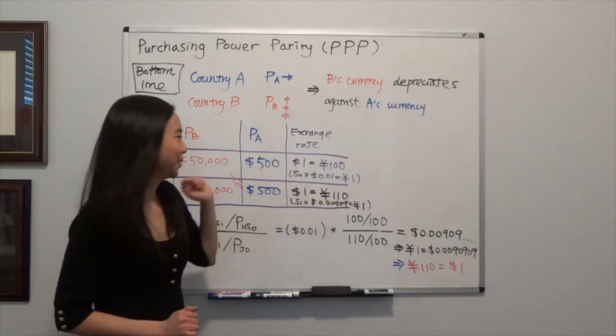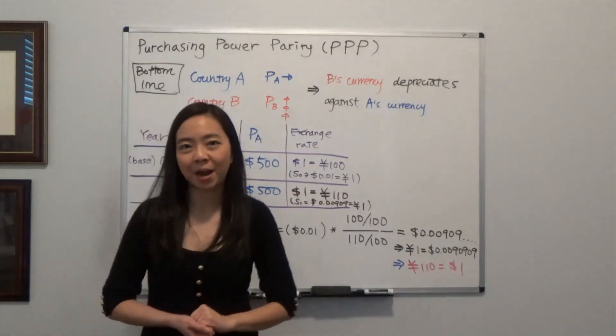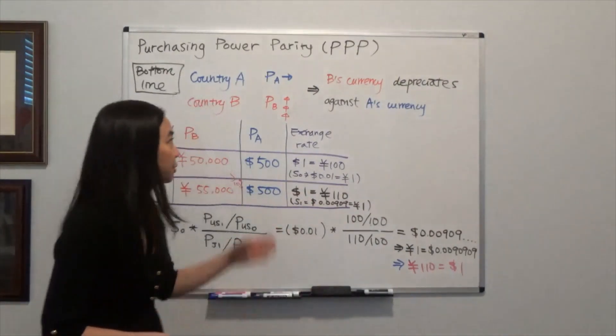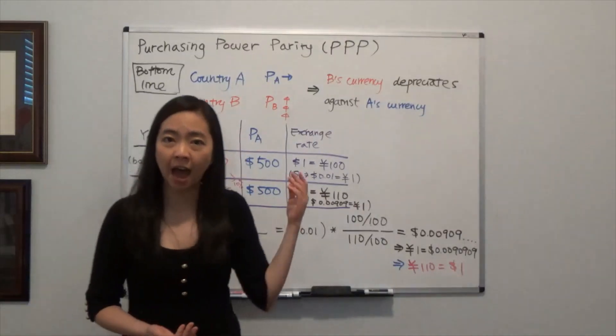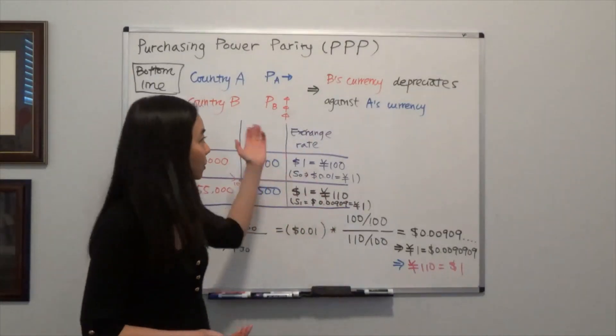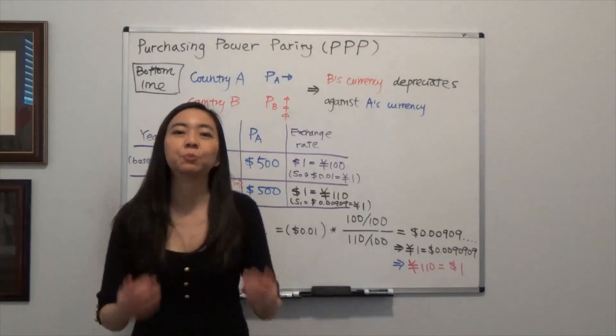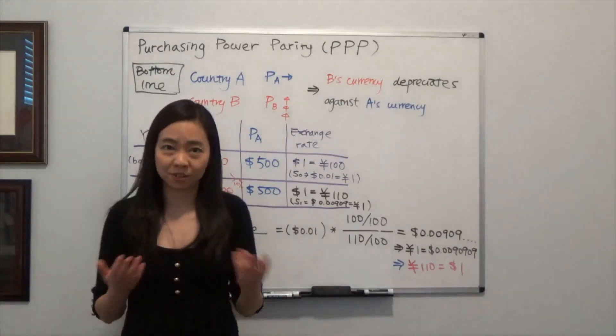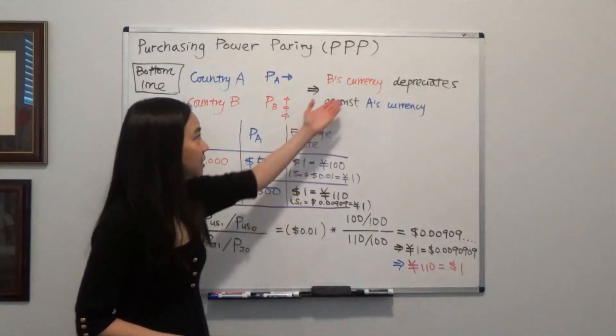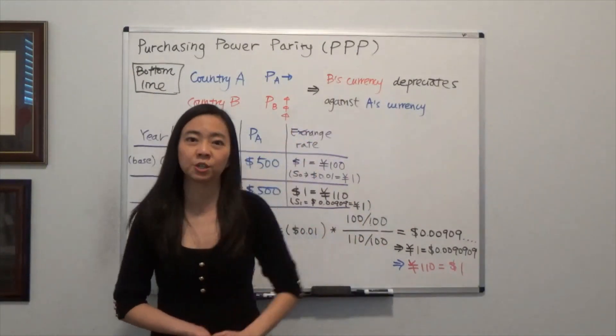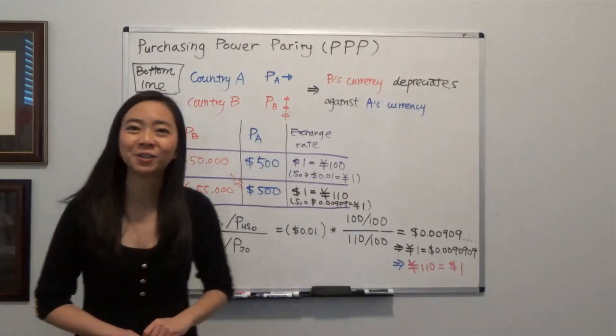So that is purchasing power parity. I hope you understand the intuition first. If a country has a higher inflation rate, that means the government prints too much money. If you print a lot of money, that means your money will be worth less. And therefore, your currency should depreciate against the other country's currency. I hope this helps, and I'll see you next time.